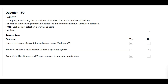Question number 150. A company is evaluating the capabilities of Windows 365 and Azure Virtual Desktop. For each of the following statements, select Yes if the statement is true, otherwise select No. Statement 1: Users must have a Microsoft Intune license to use Windows 365 — the correct answer is Yes. Statement 2: Windows 365 uses a multi-session Windows operating system — the correct answer is No. Statement 3: Azure Virtual Desktop uses an FSLogix container to store user profile data — the correct answer is Yes.